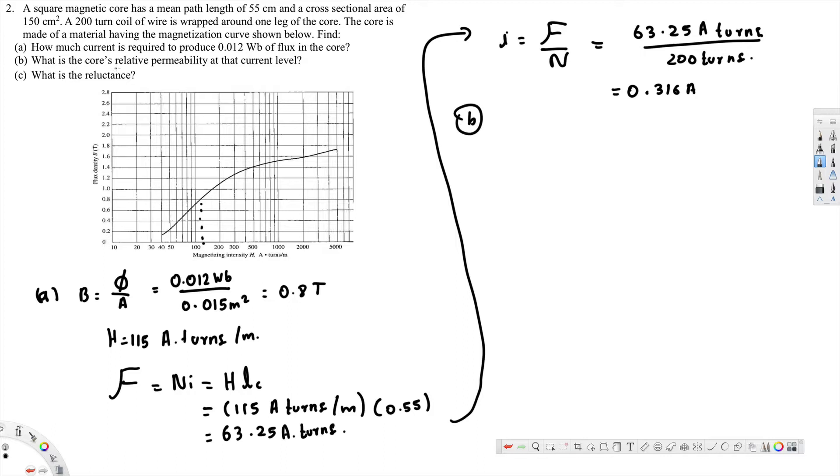Now let's look at part B. Part B is asking what is the core's relative permeability at the current level. Relative permeability is mu_r, that's what we're going to find. To find that out, first we have to find out mu. Mu_r is equal to mu over mu naught. Mu naught is a constant value we can plug in directly, but mu we have to find out.